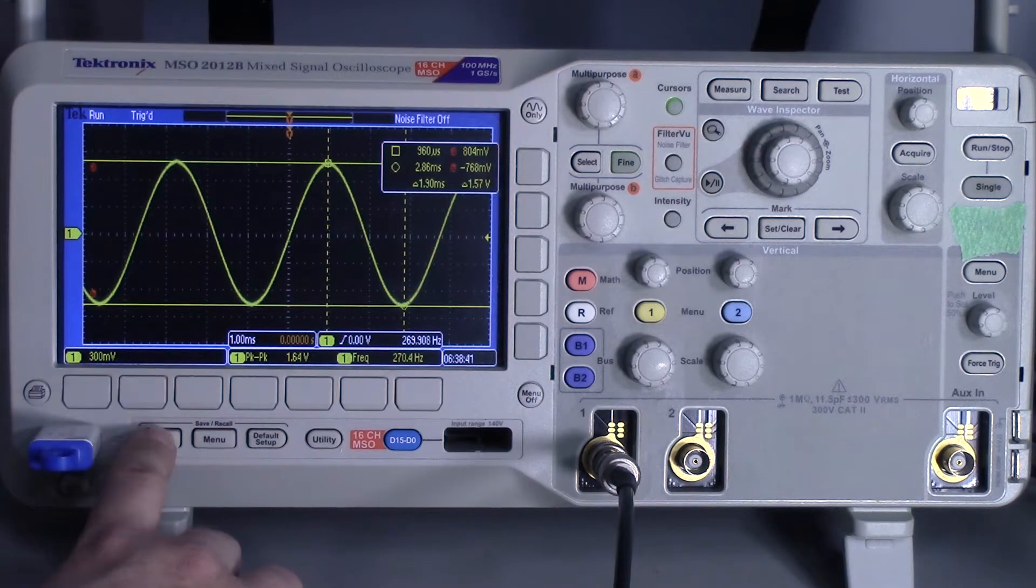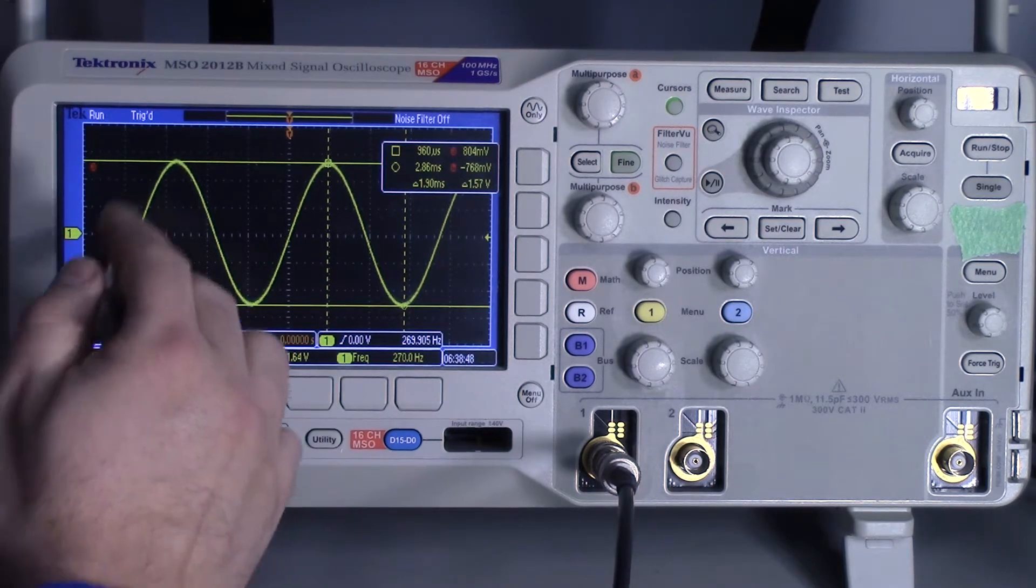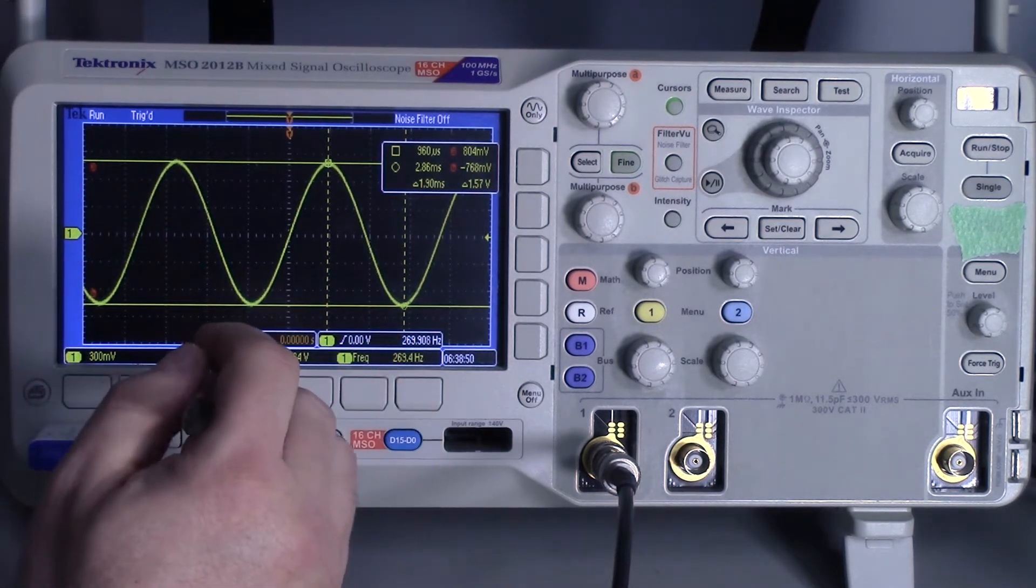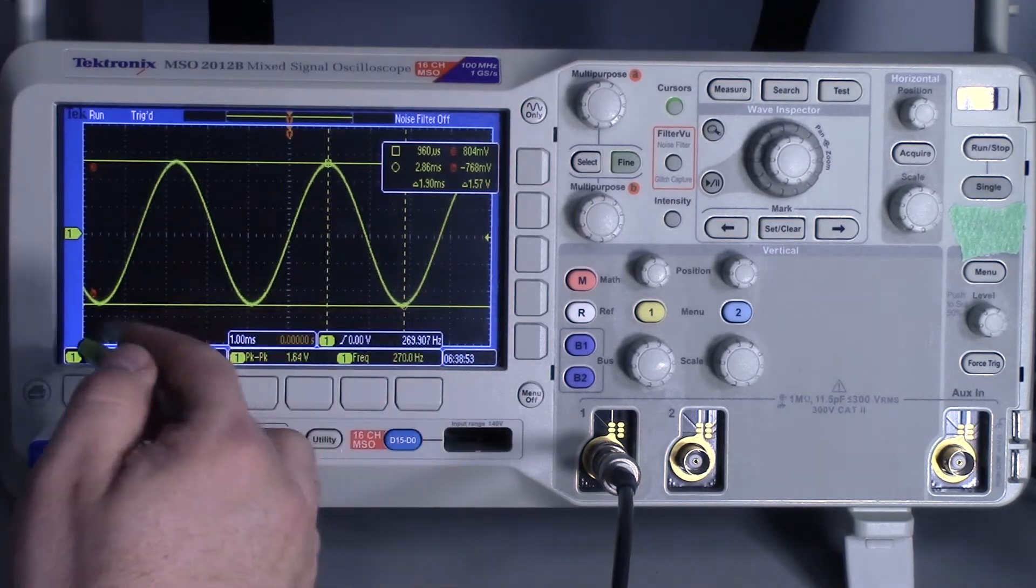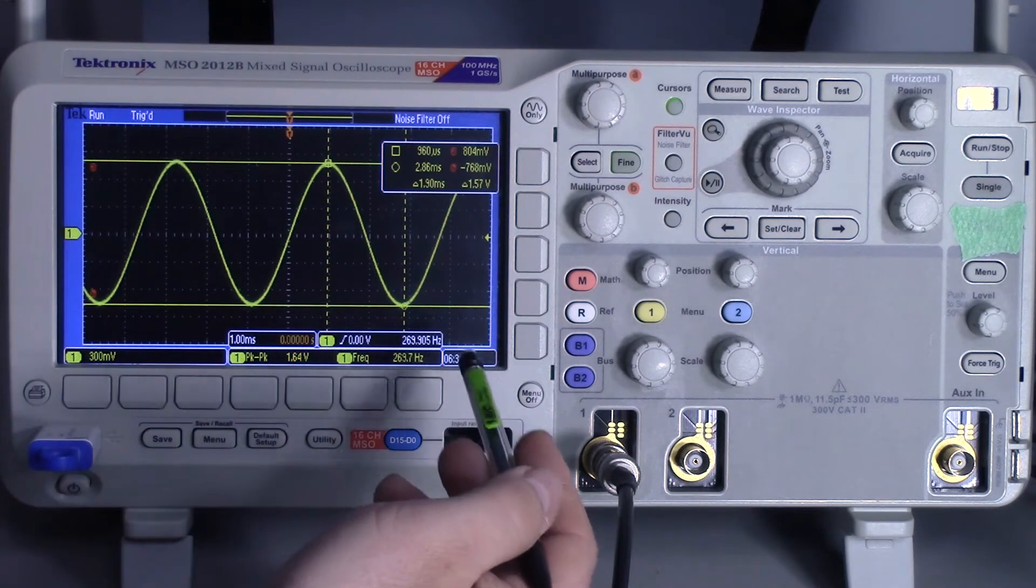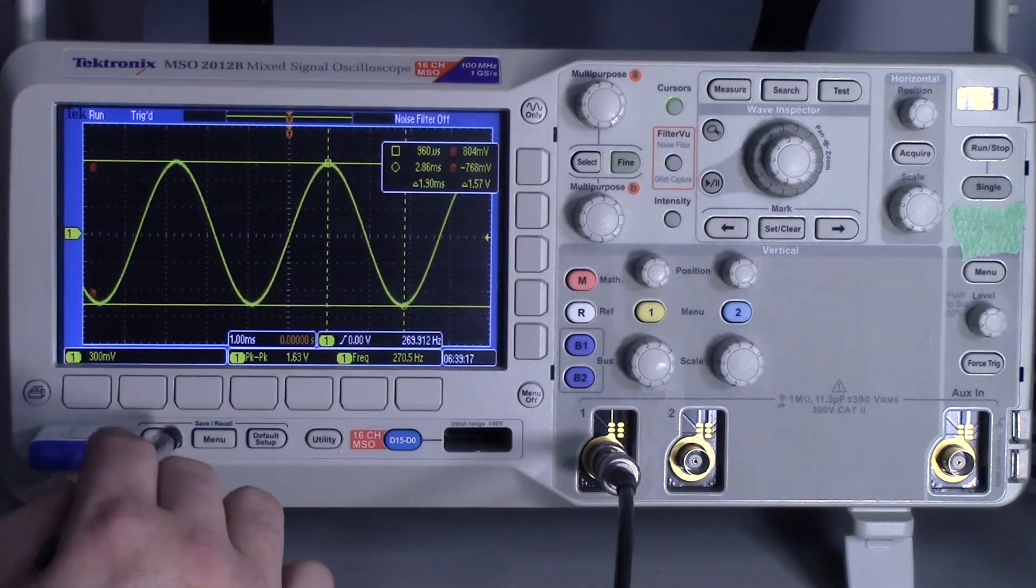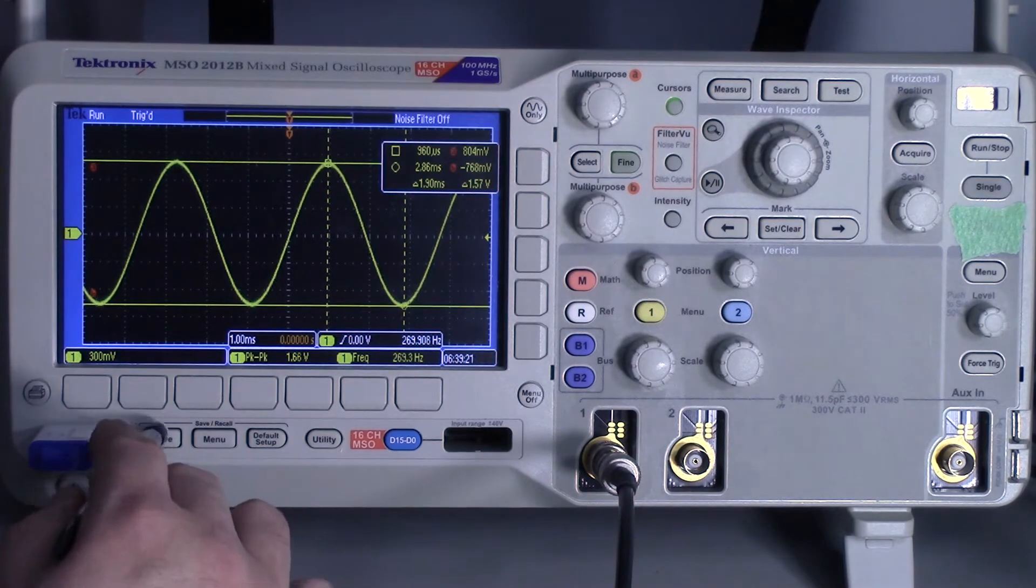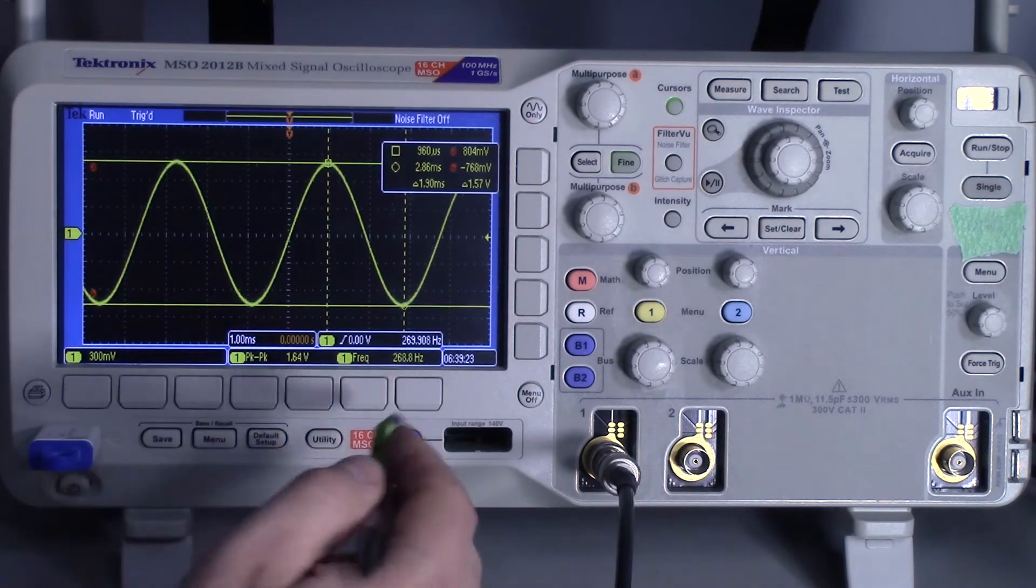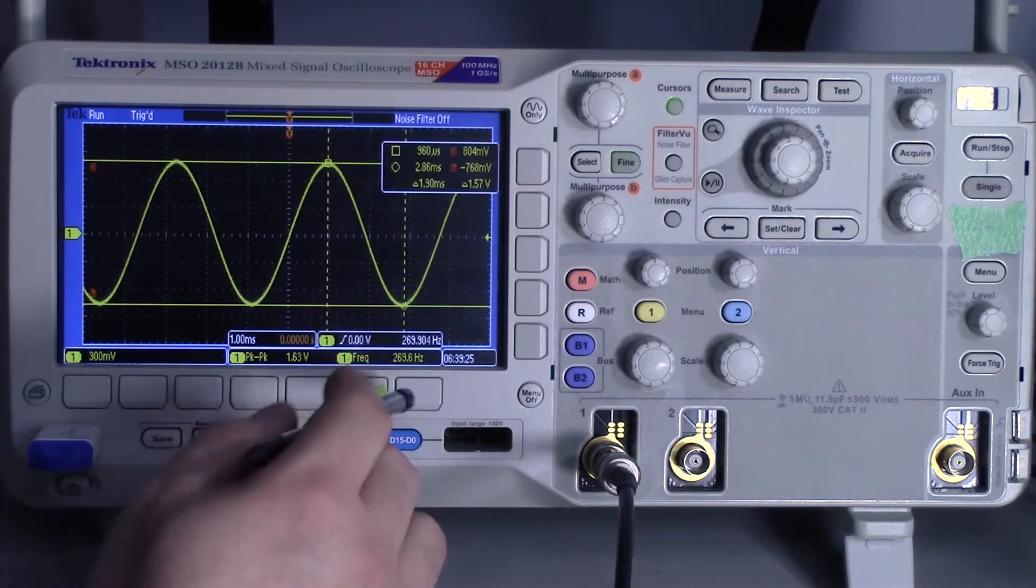If you expect it to save an image and it saves it as a waveform, you'll get a CSV file. You can reproduce the waveform, but then you're going to lose the scope image. Before you start taking measurements and just clicking the save button thinking that you're capturing an image, you want to make sure that's the case.